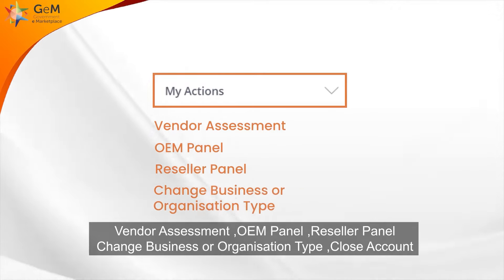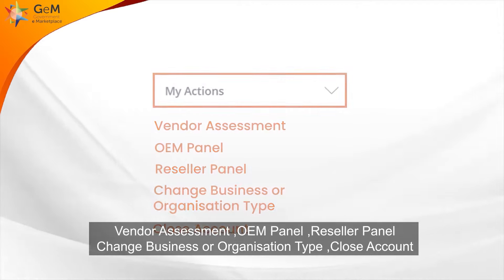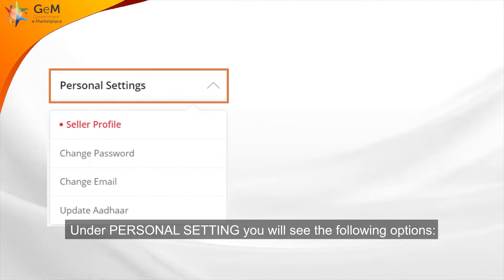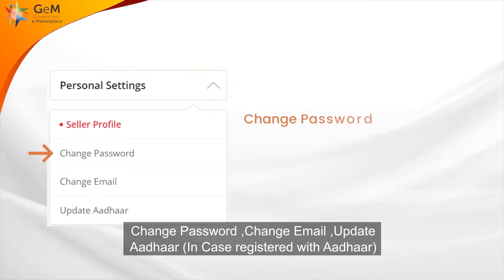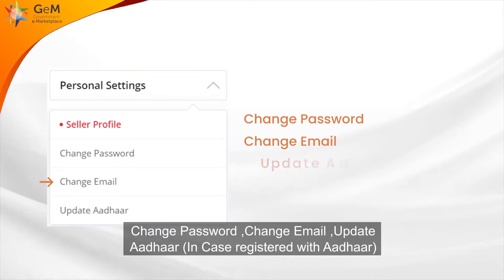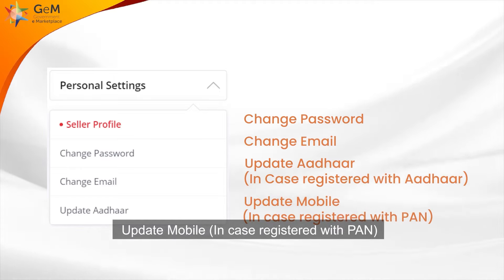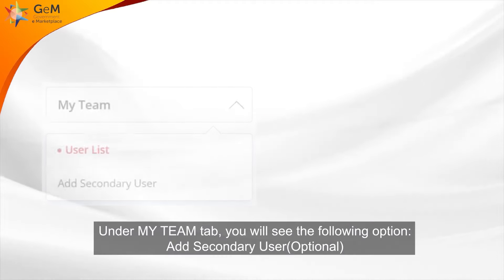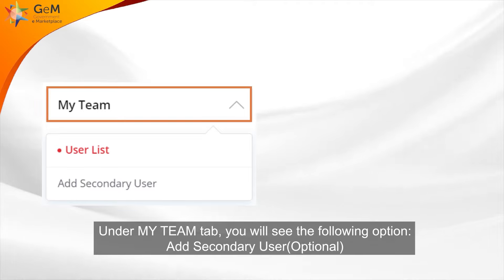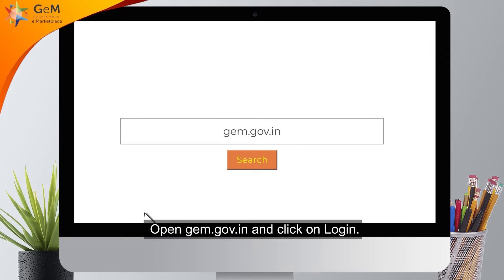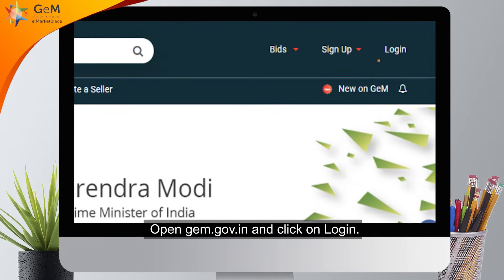Under My Action, you will see the following tabs: vendor assessment, OEM panel, reseller panel, change business or organization type, and close account. Under Personal Settings, you will see: change password, change email, update Aadhaar (if registered with Aadhaar), and update mobile (if registered with PAN). Under the My Team tab, you will see the option to add a secondary user.